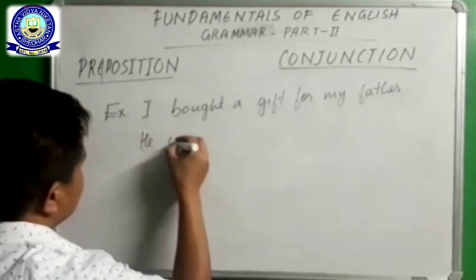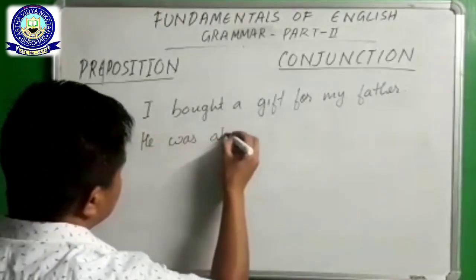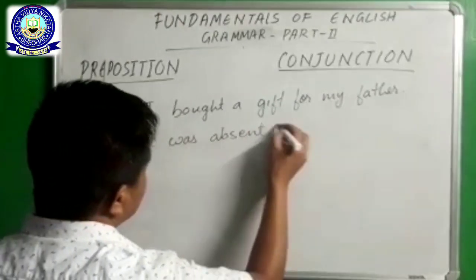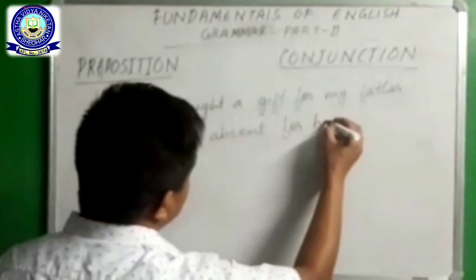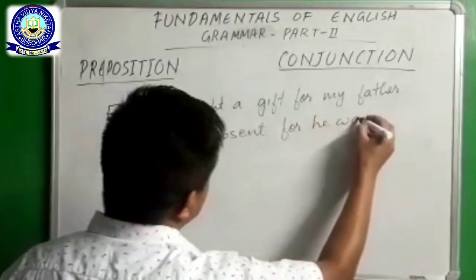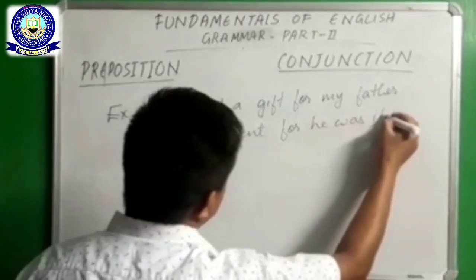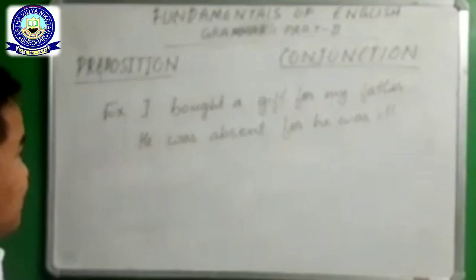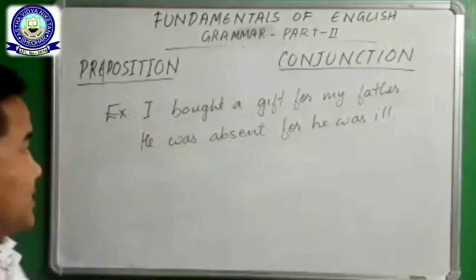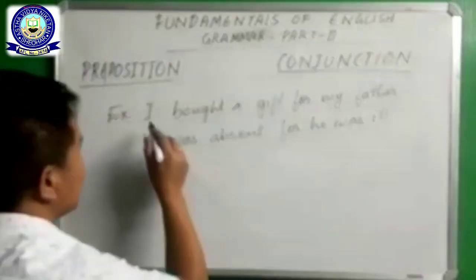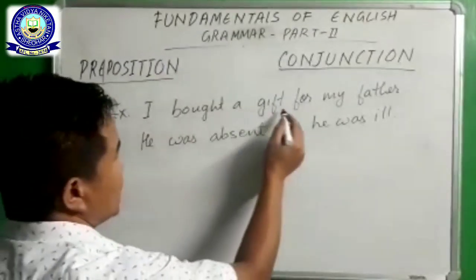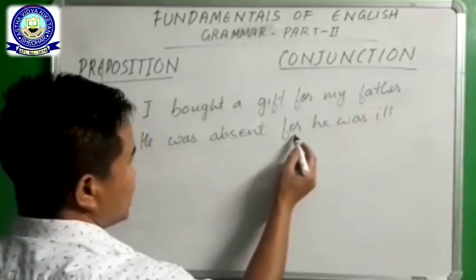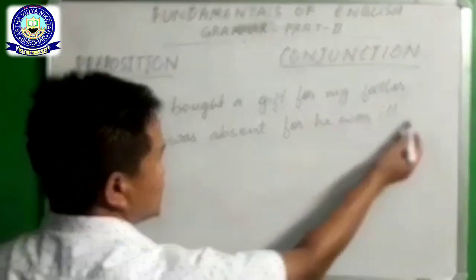Second example: 'He was absent for he was ill.' So we have two sentences — 'I bought a gift for my father' and 'He was absent for he was ill.' Now in the first sentence we have got a subject, verb, and object.